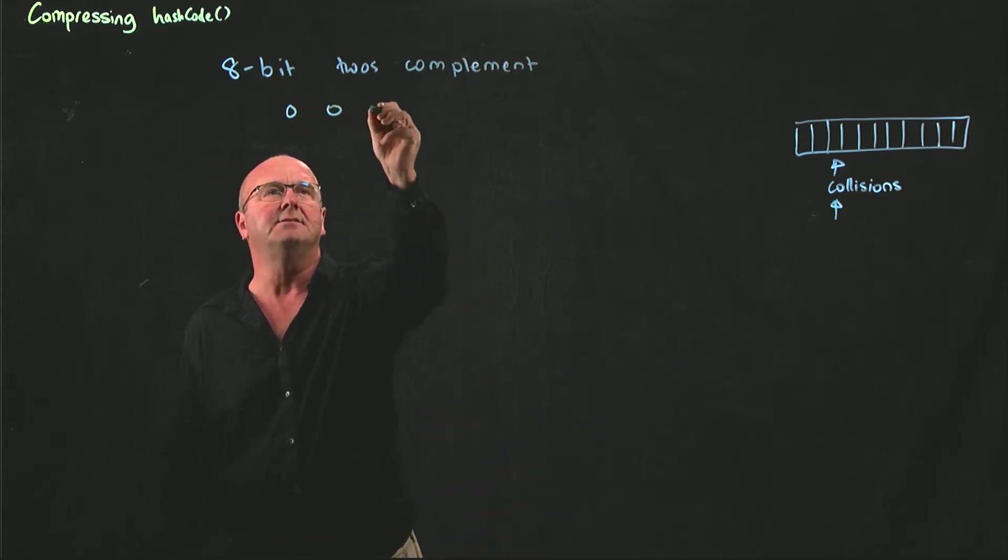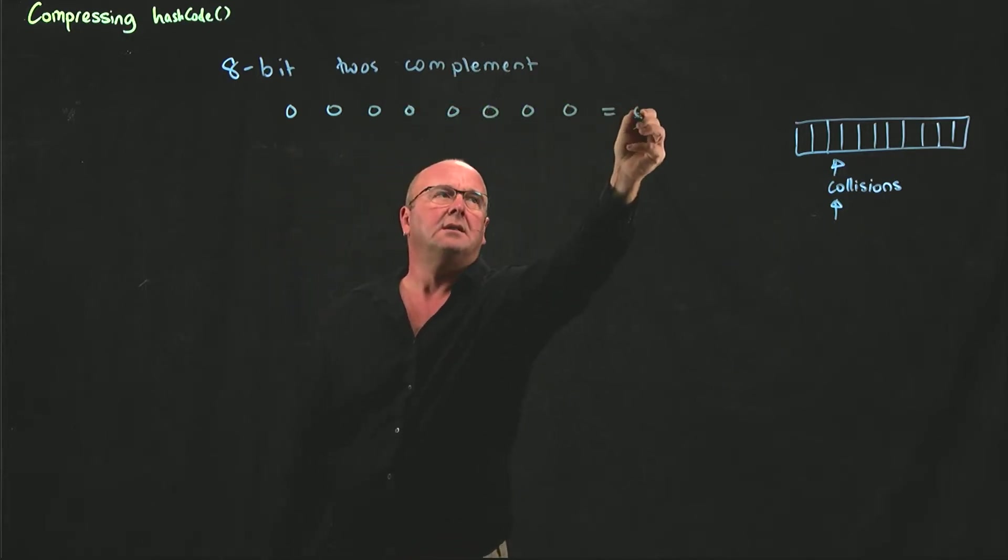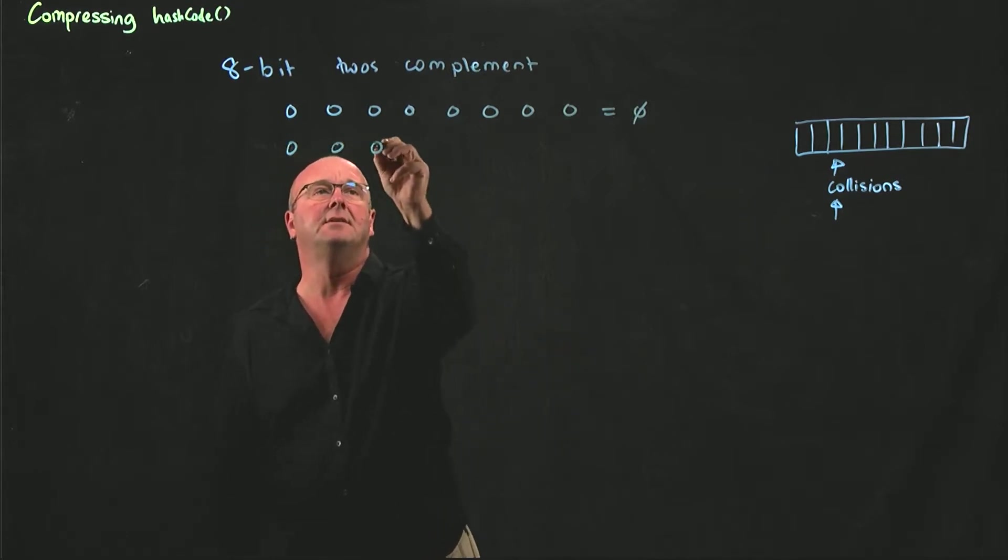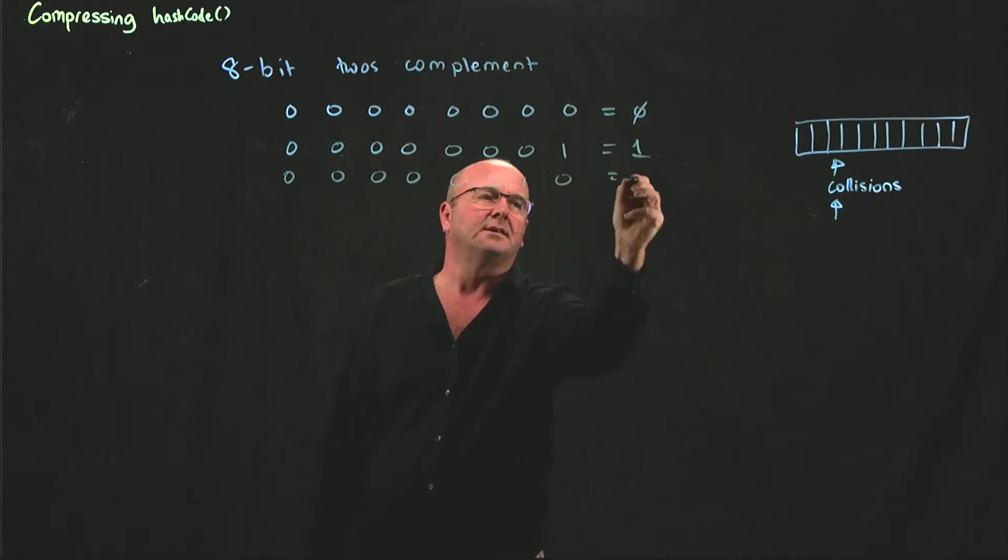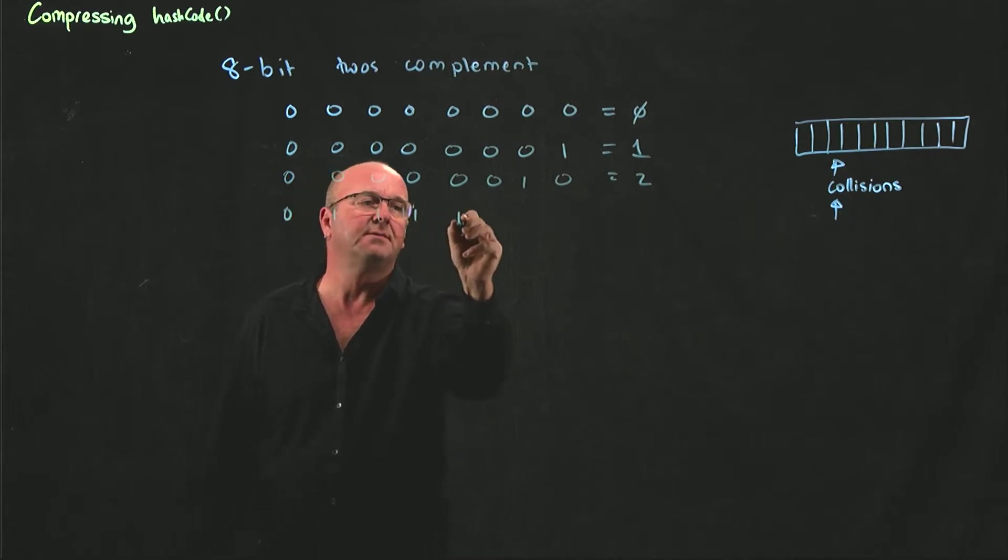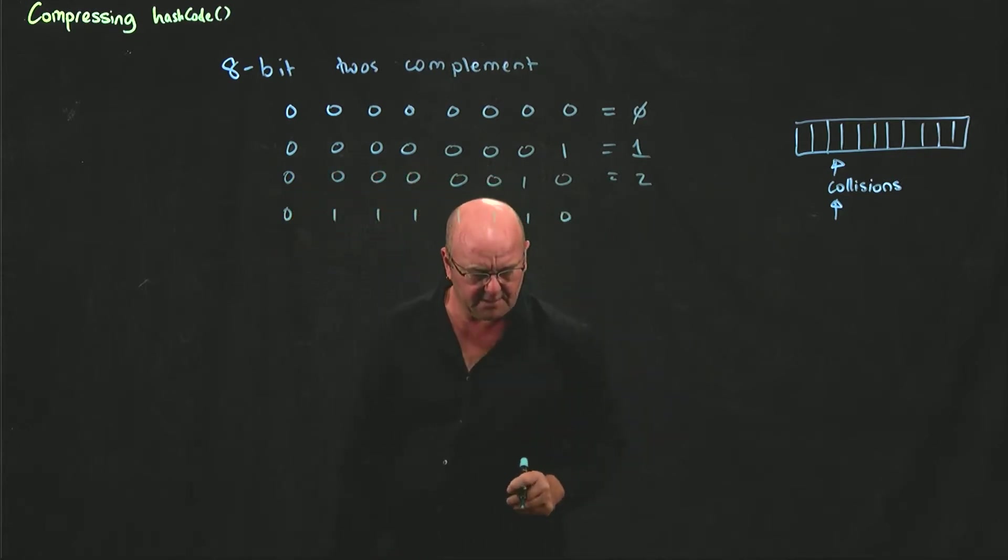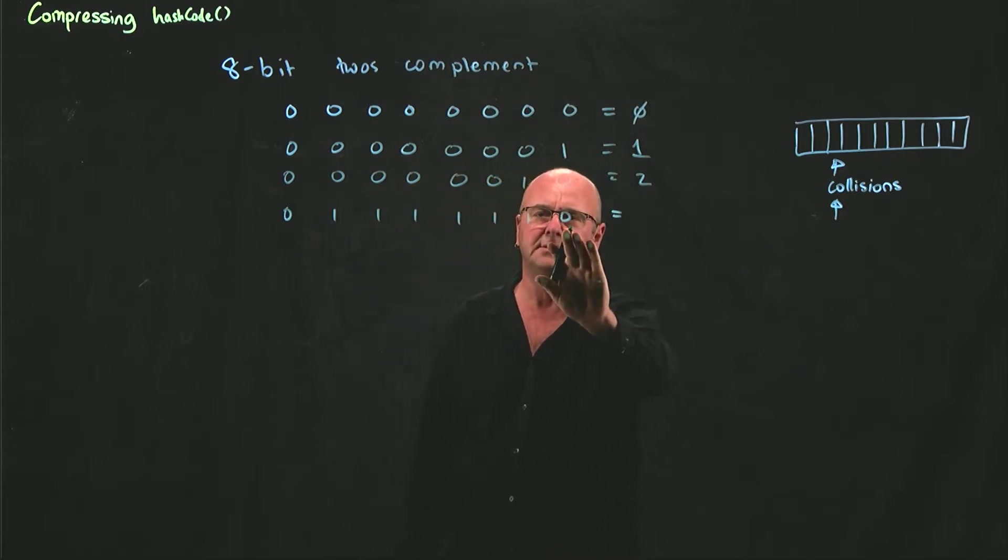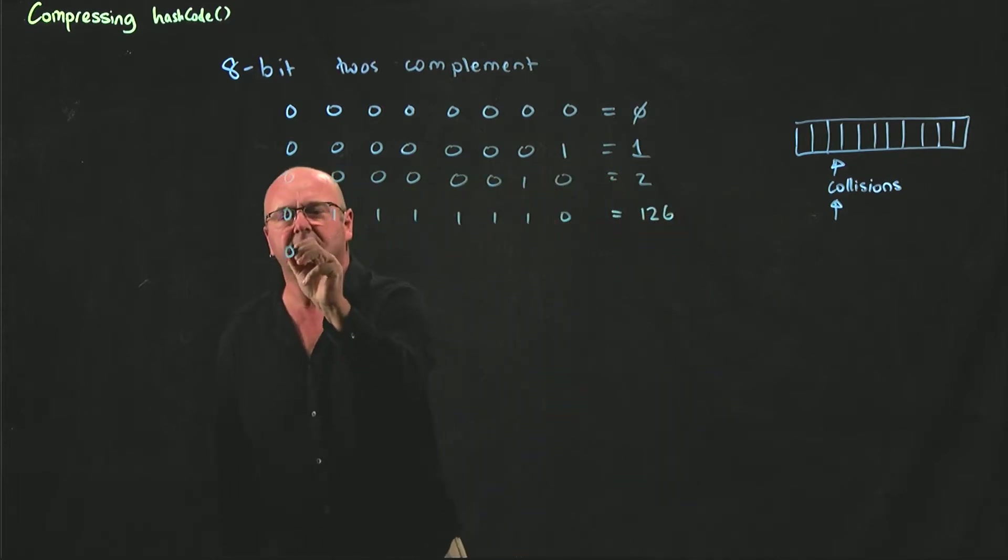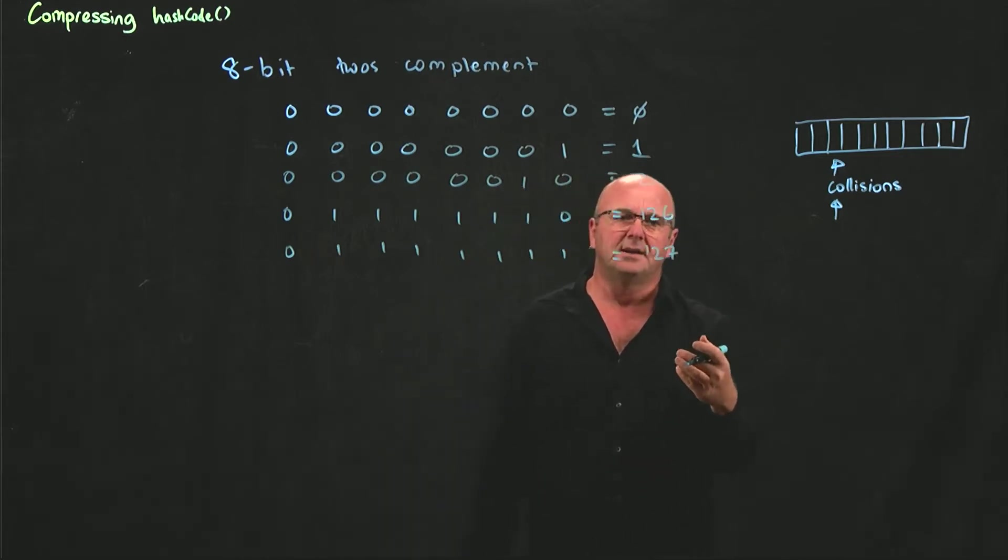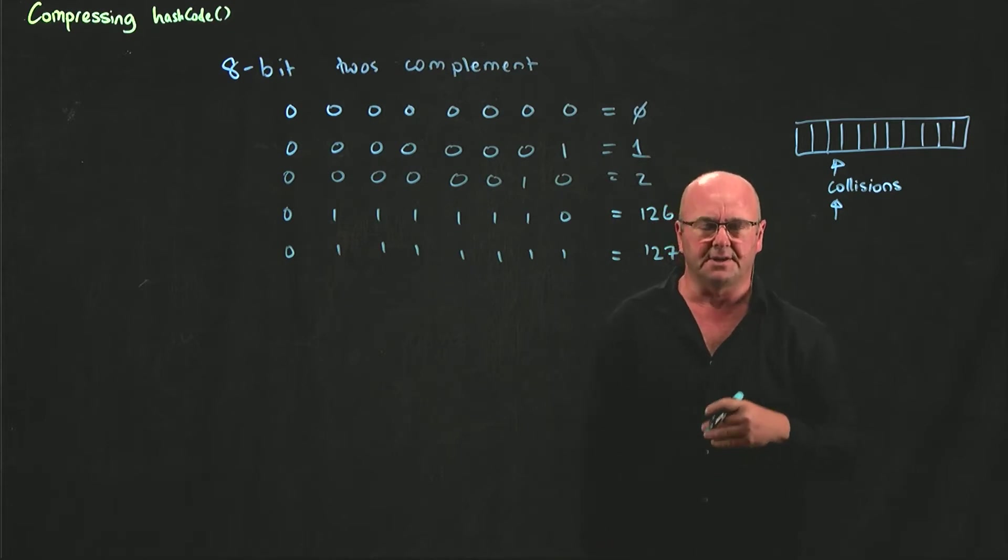Obviously, if we have 8 zeros, that's going to give us 0. If every bit is 0, it's 0. And of course, if we have 0, 1, that's 1, and that's 2. So what is 0, 1, 2, 3, 4, 5, 6 ones and a 0? That's 126. And 0 with 7 ones is 127. So 127 is the largest number you can store using 8 bits if you've got it as a signed integer.